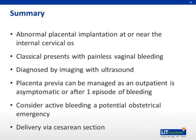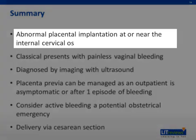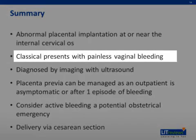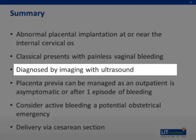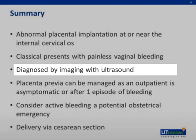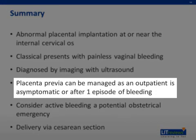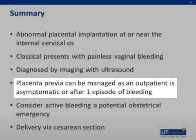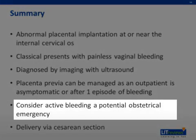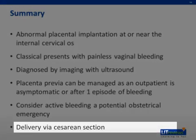In conclusion, placenta previa occurs when there is abnormal placental implantation at or near the internal cervical os. It classically presents with painless vaginal bleeding and is diagnosed by imaging with ultrasound, with MRI follow-up if there is concern for placenta accreta. Placenta previa can be managed as an outpatient if the patient is asymptomatic or after one episode of bleeding. Active bleeding in placenta previa should be considered a potential obstetric emergency, and mode of delivery should be by cesarean section.